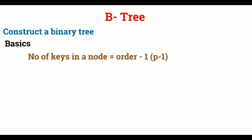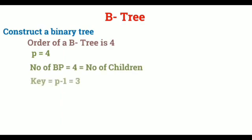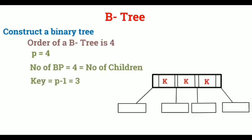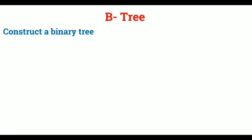Intermediate node also can have the same number of maximum children whereas the minimum is B by 2. Next, number of keys in the node is order of tree minus 1. Now, let's see a basic example given order of tree is 4. Since order is 4, the number of block pointer is also 4, which is equal to the number of children, and a key value of each node can contain 1 less than the order, that is 3.